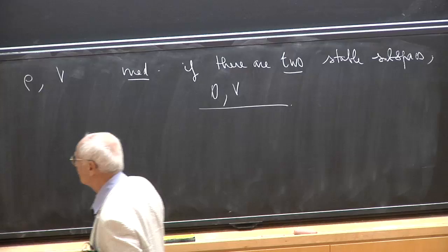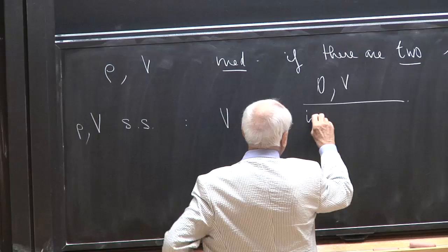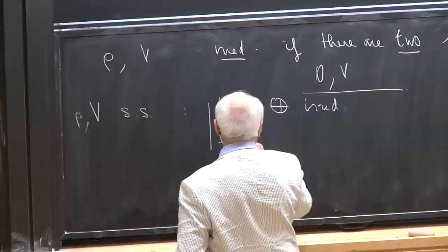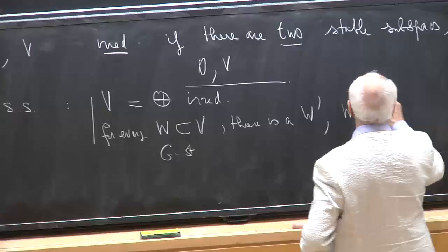One says that V is semi-simple if — equivalent definitions — V is a direct sum of irreducibles, or more interestingly, for every W in V which is G-stable, there is a complement W' with W' plus W equals V and W' also G-stable.